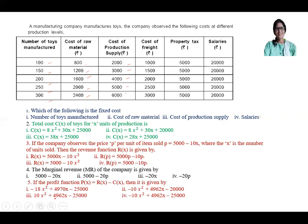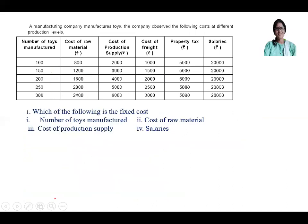For question one, salary is the fixed cost. Though property tax is also fixed, it is not among the options. So the answer is option four — salaries.